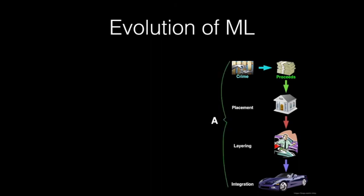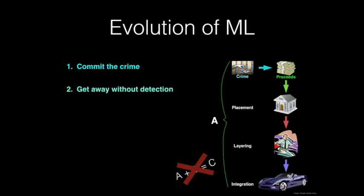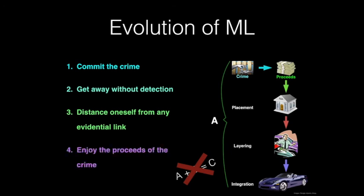This lack of understanding of the criminal mind has led compliance officers and due diligence teams to inadvertently slip into a tick-box mentality. To carry out their roles properly, they need to understand the criminal — and to do that, they must understand how the criminal mind evolves and seeks ways to bypass regulatory thresholds. The criminal's way of thinking starts with a simple four-part goal: first, commit the crime; second, get away with it without detection; third, distance oneself from the evidential link including the proceeds; and fourth, still enjoy those proceeds by circumventing regulatory requirements.